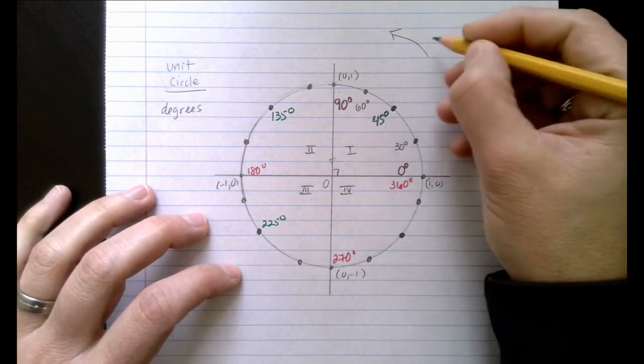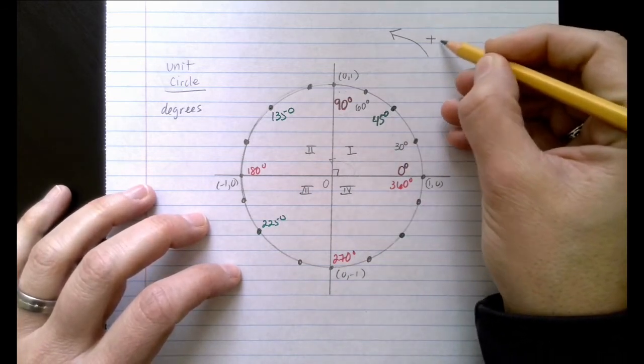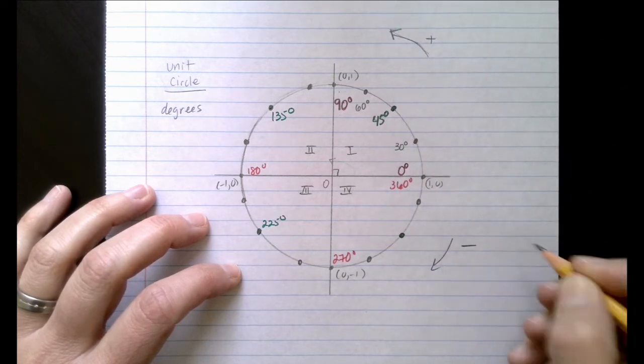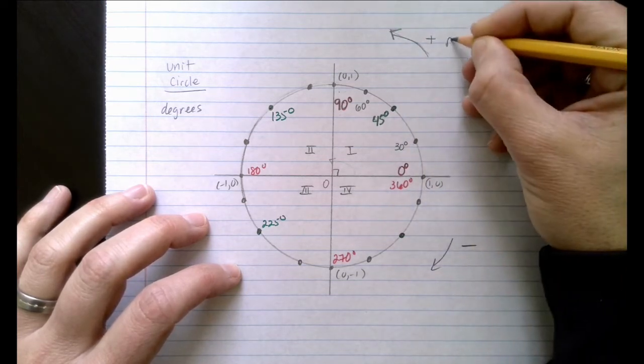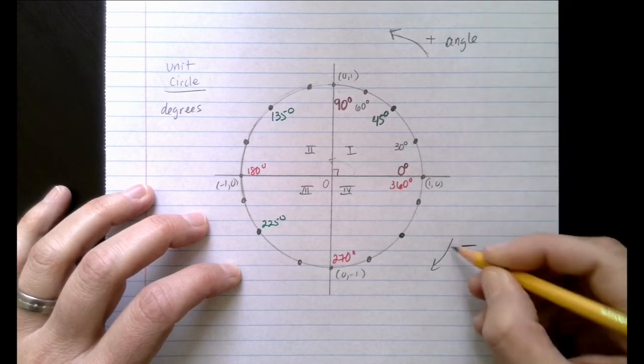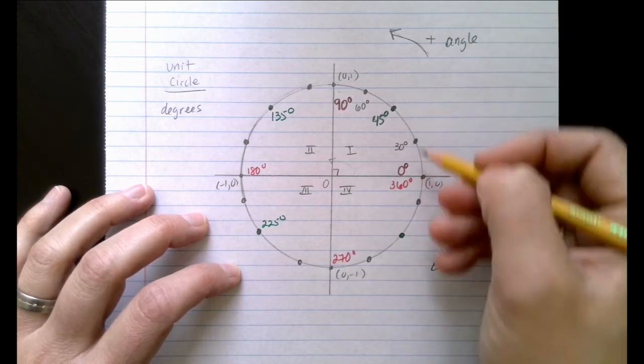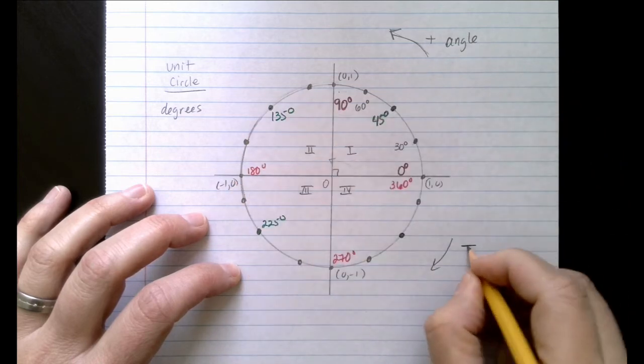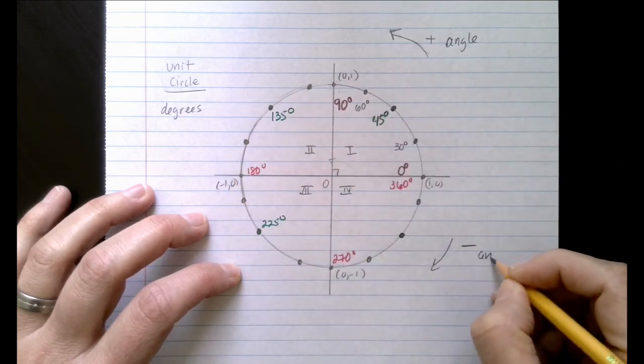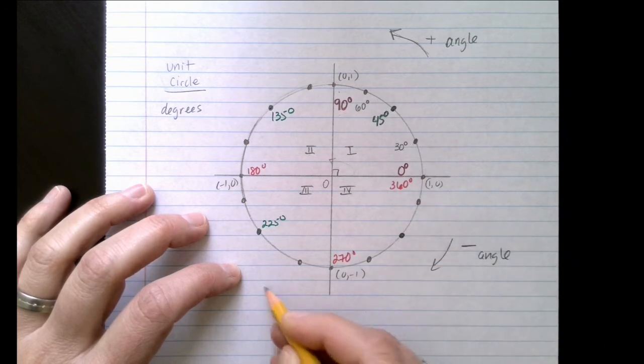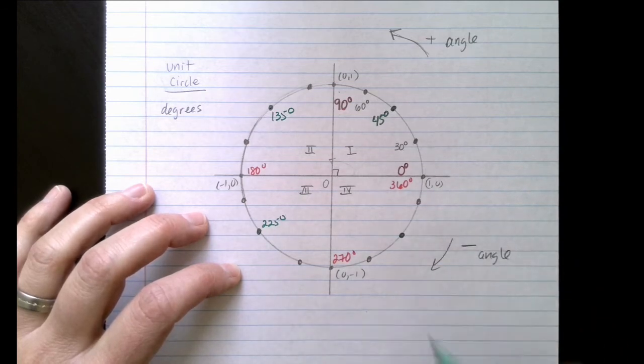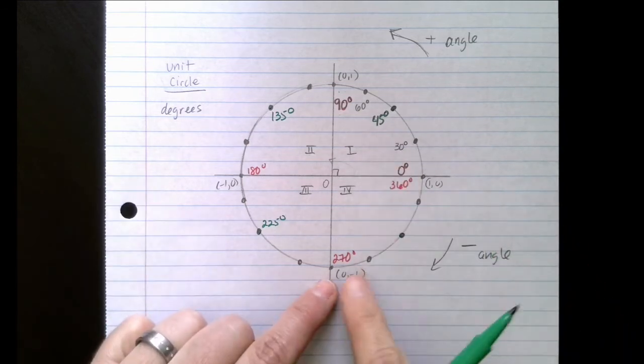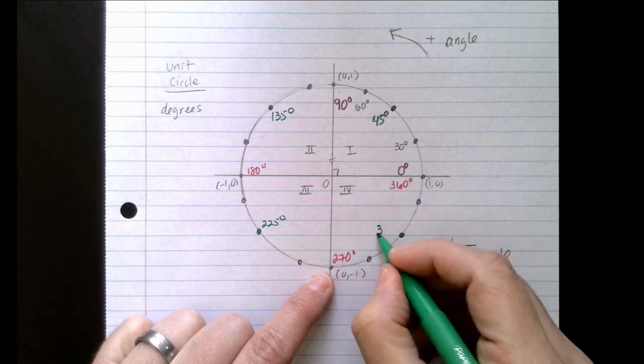So if my angle is positive, I go in this direction. If my angle is negative, I read my circle in counterclockwise directions. If my angle is negative, I read it in a clockwise direction. So it's important to know that. So let's add 45 degrees to 270, and we get 315.